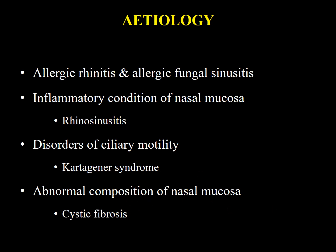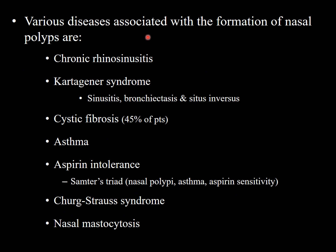Various diseases associated with nasal polypi include chronic rhinosinusitis, Kartagener syndrome (sinusitis, bronchiectasis, and situs inversus), cystic fibrosis — 45% of cystic fibrosis patients develop nasal polyps — asthma, and aspirin intolerance. There is one triad known as Samter's triad, which includes nasal polypi, asthma, and aspirin sensitivity. Other associations include nasal mastocytosis.